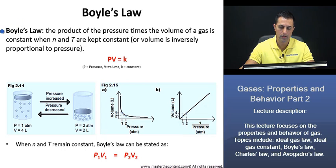Boyle's Law. Let's go ahead and read the definition for Boyle's Law once again. The product of the pressure times the volume of the gas is constant when the quantity of gas and temperature are kept constant. Or, as we previously stated, the volume is inversely proportional to pressure. And the equation is as follows: PV = k. And this notation here is for constant.